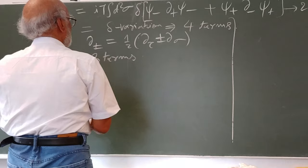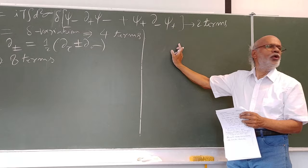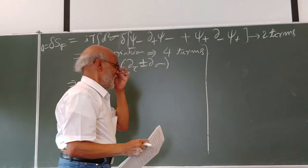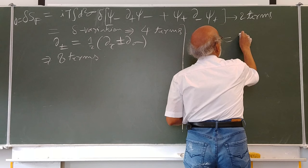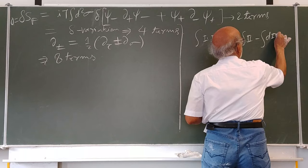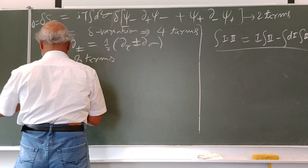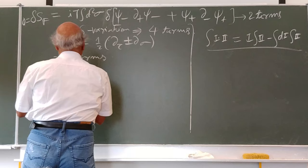Then you use integration by parts — not partial integration, but integration by parts: the integral of the product of two functions, where the integral of first times second equals first function times integral of second, minus the integral of the derivative of first times integral of second. Making use of this integration by parts on each term...